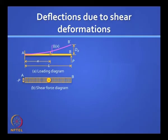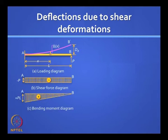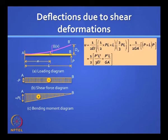The shear force diagram shows a constant shear force P and the bending moment diagram is a sagging bending moment diagram varying linearly. If you want to find the strain energy in the system, you can use that formula, but now we will include shear strain energy as well. The part where we multiply the bending moment diagram by itself is the part that comes from flexural strain energy, and this part is the part that comes from shear strain energy.